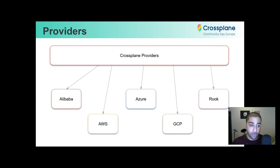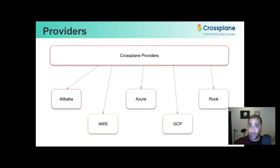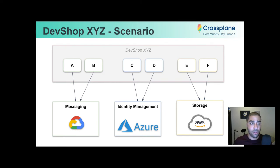This lets us leverage Kubernetes to monitor these providers and the resources you're creating on these particular clouds. For example, let's say that we've configured our Kubernetes cluster to support Alibaba Cloud. We can create resources on this cloud and our Kubernetes cluster, leveraging our Crossplane provider for that cloud, will watch these resources and ensure that they are created and configured the way we need them to be.